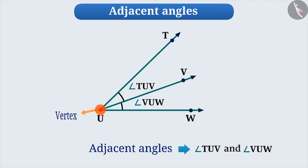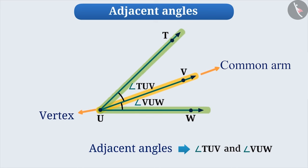When they have a common vertex, they have a common arm. The non-common arms are on either side of the common arm, i.e. their interiors never cover each other, meaning they will never overlap.